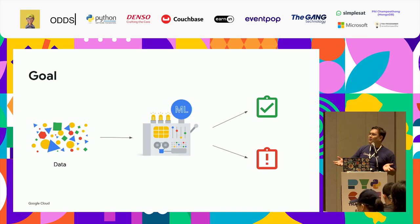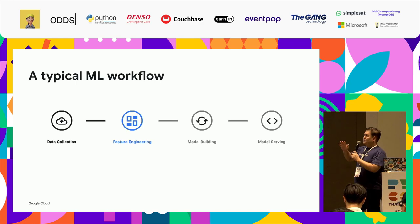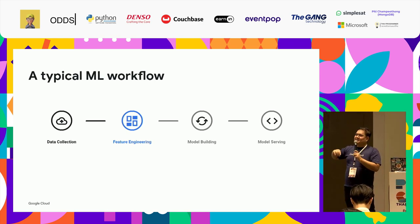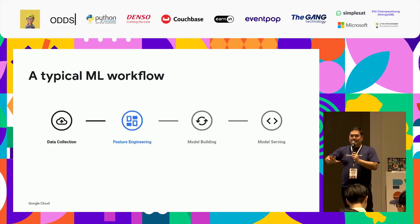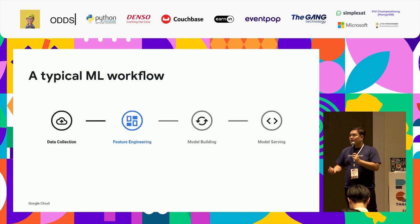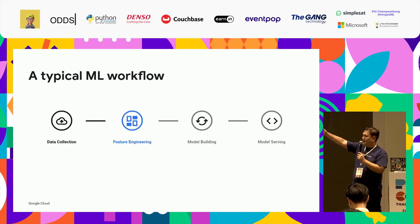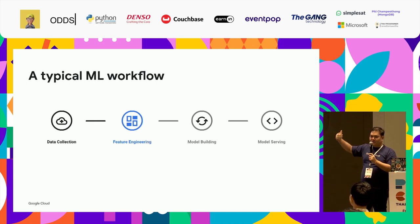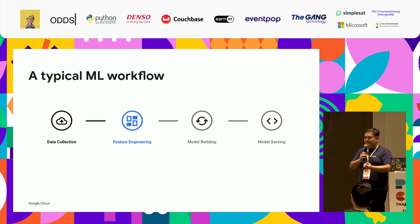Our goal is to use that data so that whenever you generate a tap, we can feed it to machine learning to tell us whether the transaction was done by the user or is fraud. In a typical machine learning workflow, you collect your data, do feature engineering to create signals, then do model building. For this talk, we'll focus just on feature engineering — where we need the signal to detect fraud.